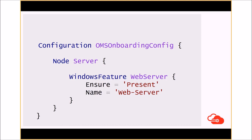Desired State Configuration provides a set of PowerShell language extensions — because it's not really PowerShell — and resources that can be used to specify how you want your server to be configured. Once you run this configuration, it will provide one or more configurations, which are actually MOF documents. MOF stands for Management Object Format, and it's basically a plain text file in a format developed by open standards.